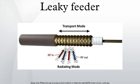A leaky feeder is a communications system used in underground mining and other tunnel environments. The layman's term leaky feeder implies that the cable is in some way deficient. Manufacturers and cabling professionals use the term radiating cable, as this implies that the cable is designed to radiate — something that coaxial cable is not generally supposed to do.